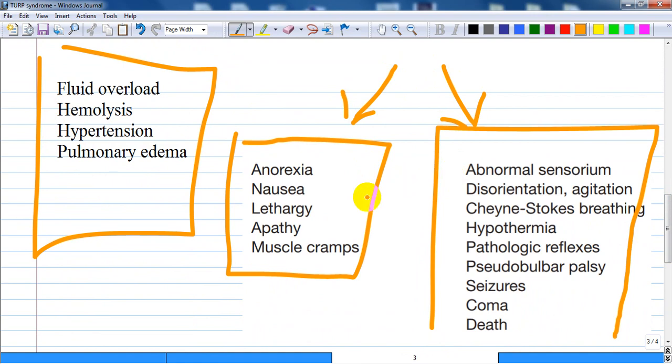Use of hypotonic irrigating solutions can also induce hemolysis of the red blood cells, which is encountered with significant influx of free water from hypotonic extracellular fluid. Hypertension and pulmonary edema from fluid overload are common.